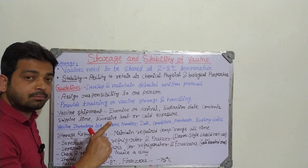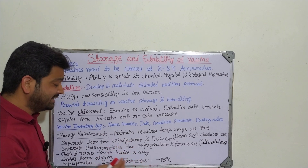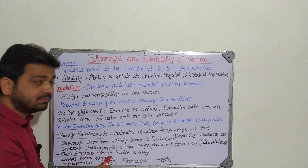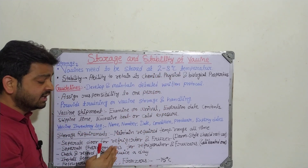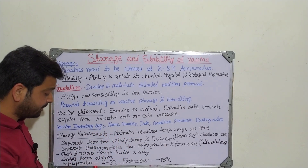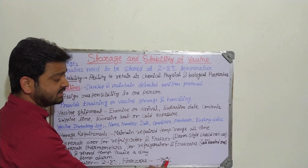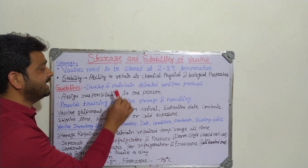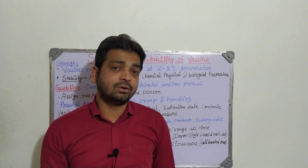Checking temperature twice daily — morning and evening — is essential, so nothing goes unnoticed. A temperature alarm should be installed so that whenever the temperature fluctuates, such as below 1 or above 8 degrees centigrade, the alarm indicates something is wrong. For refrigerators, maintain 2 to 8°C; for freezers, maintain minus 15°C, to preserve chemical, physical, and biological stability.